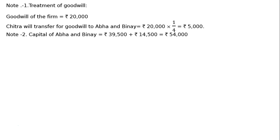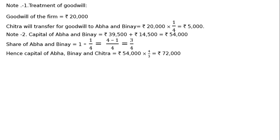Next is the capital of Abha and Vinay. First, the balance of the capital account: Abha's capital is Rs. 39,500 and Vinay's is Rs. 14,500, totalling Rs. 54,000. Chitra took 1/4 share, so the remaining is 3/4. For the 3/4 share, the capital is Rs. 54,000. Hence, the total capital of Abha, Vinay and Chitra for the whole firm equals Rs. 54,000 multiplied by 4/3, which is Rs. 72,000.